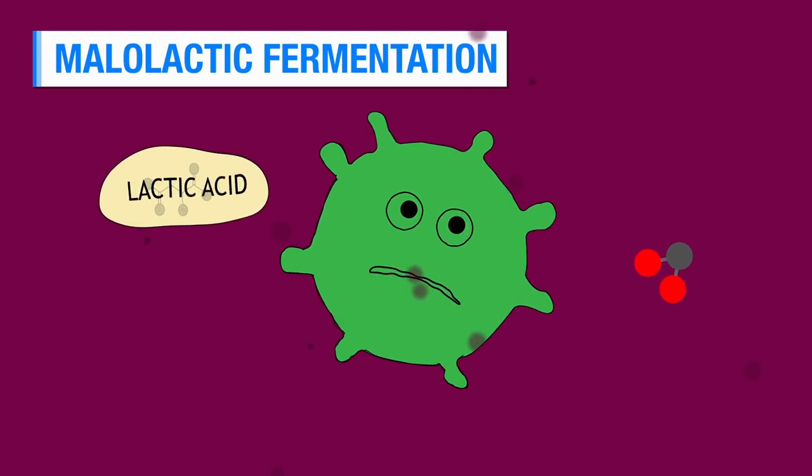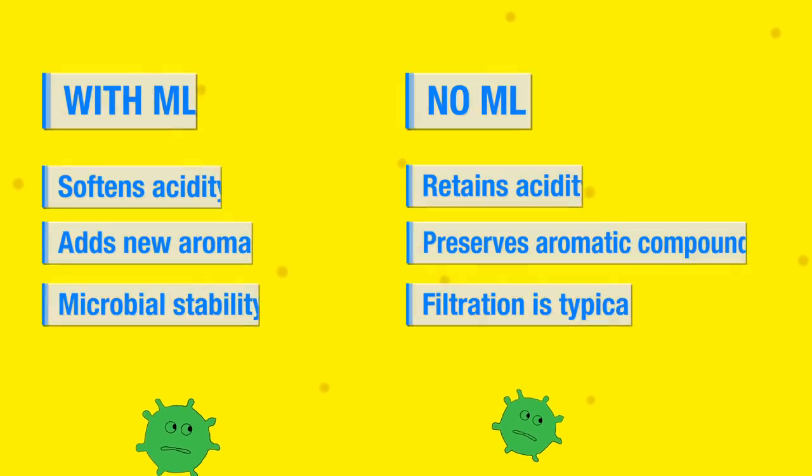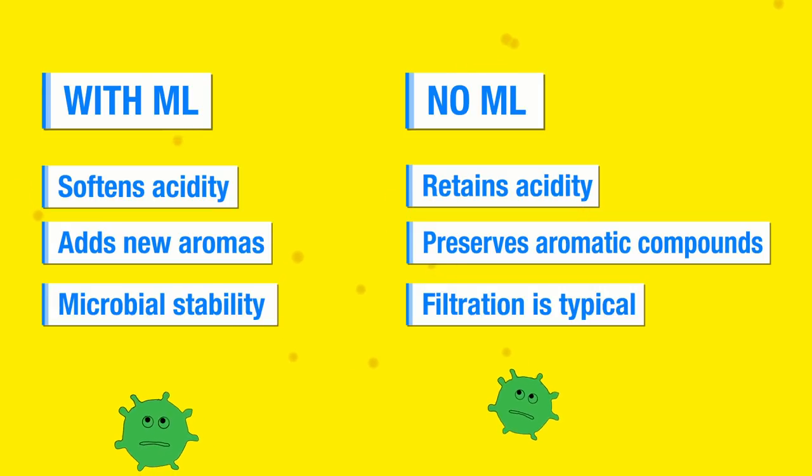Almost all red wines go through malolactic fermentation and some white wines do. Winemakers have a lot to think about when they choose to or not to go through malolactic fermentation, especially with white wines. There's kind of four components to think about.